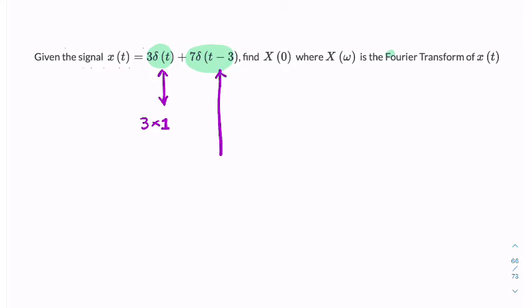then the Fourier transform would normally be 7 times 1, because the Fourier transform of an impulse is 1 and we have a scaling factor of 7.